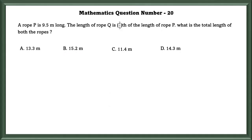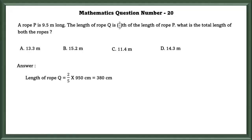Mathematics question number 20. A rope P is 9.5 meters long. The length of rope Q is 2 by 5 of the length of rope P. To find the length of rope Q, they have said it is 2 by 5 of the length of P. So, P is equal to 950 centimeters.